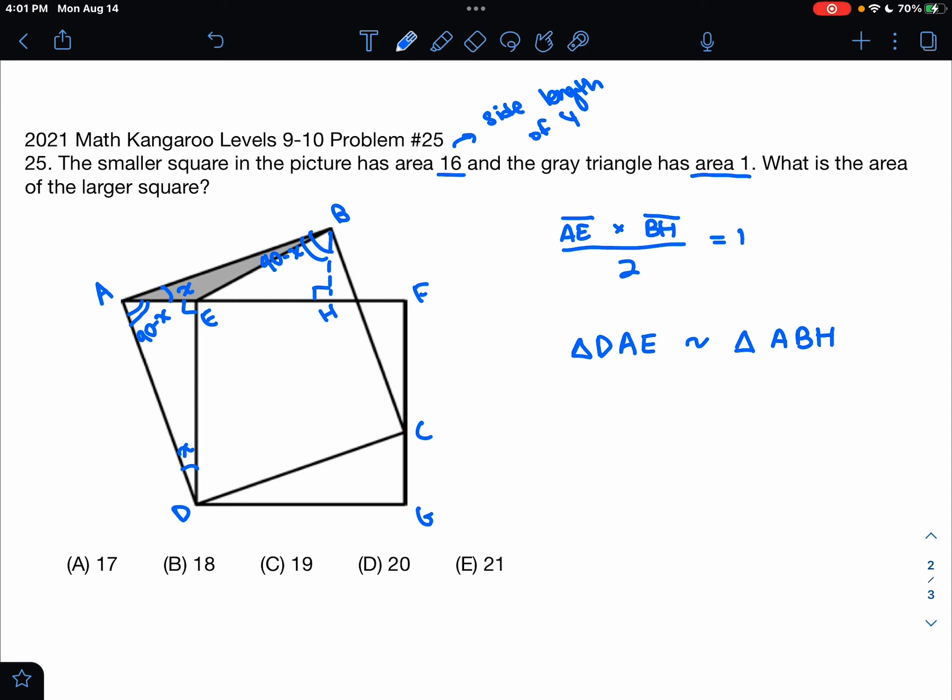And not only are they similar, we know that they actually must be congruent because side length AD, which is the hypotenuse, is equal to side length AB since they're both side lengths of square ABCD. Since we have two right triangles that all have the same angle measurements and the same hypotenuses, the two triangles must actually be congruent, not just similar.